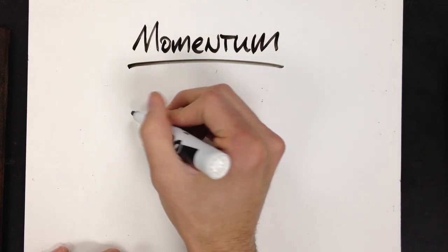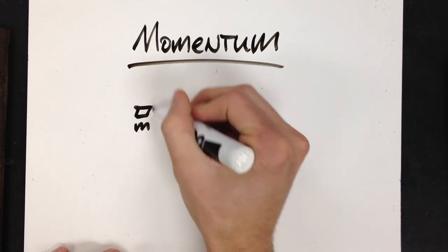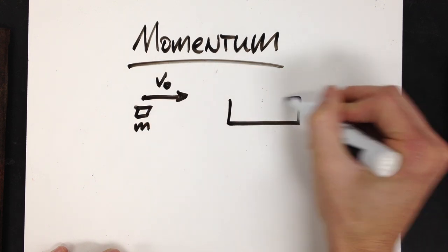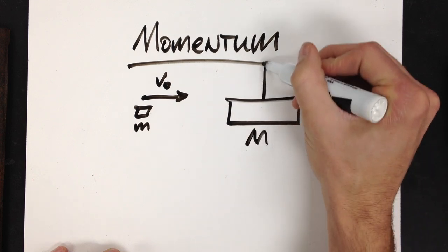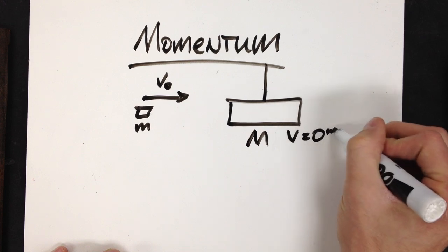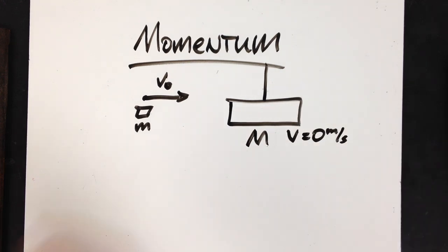Now, we're dealing with a bullet with a mass m, a speed v-naught, and here is my block with a mass capital M, and let's just say that it has an initial speed of zero. Our pendulum is at rest.